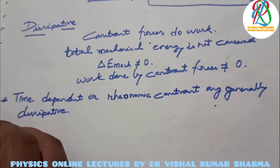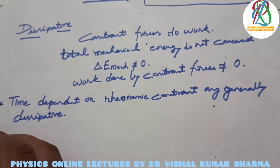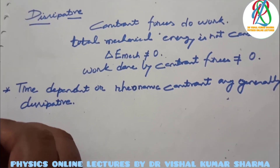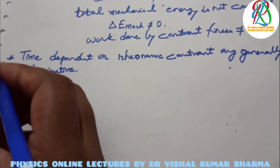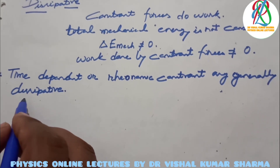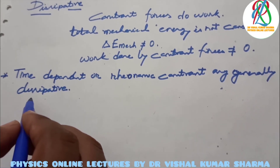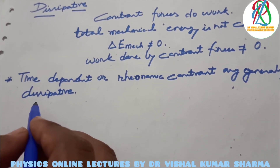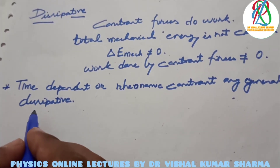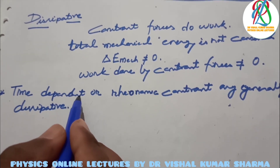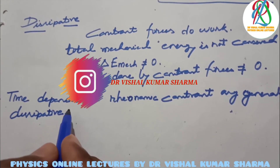To summarize, when we talk about time-dependent or rheonomic constraints, these generally fall into the category of dissipative constraints — constraints which are time-dependent or rheonomic are generally dissipative.